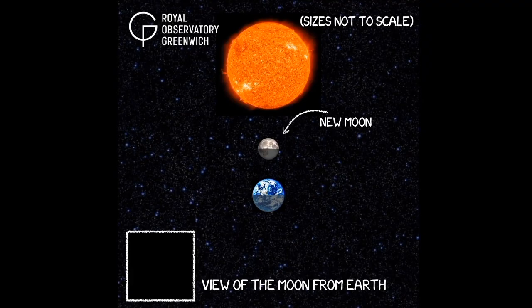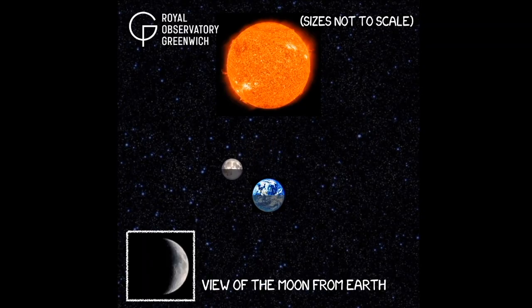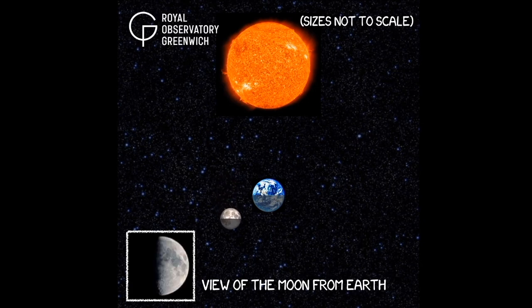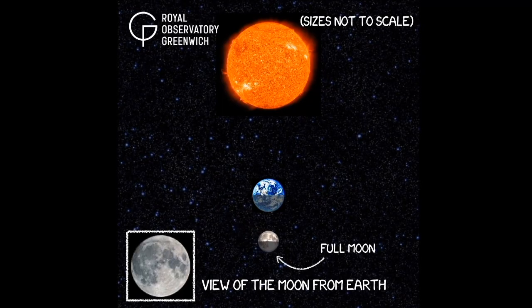When the Moon is in between the Sun and the Earth, we can't see the Moon because it's in shadow. We call this the New Moon. As the Moon orbits the Earth, more light from the Sun will move across the surface of the Moon as we can see it from the Earth, making it look like the Moon is getting larger over time. These phases are called waxing phases. When the Moon is on the opposite side of the Earth from the Sun, this is when we have a full Moon.